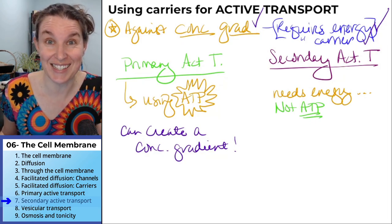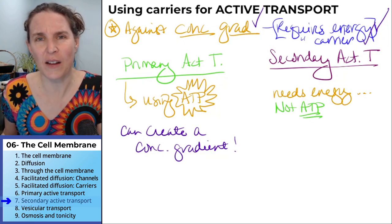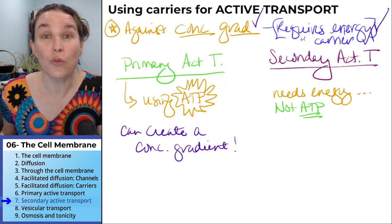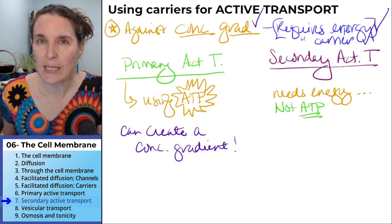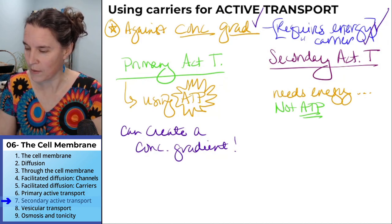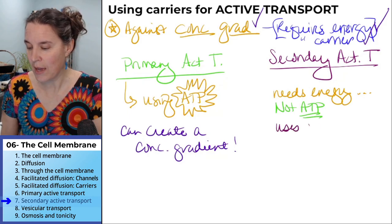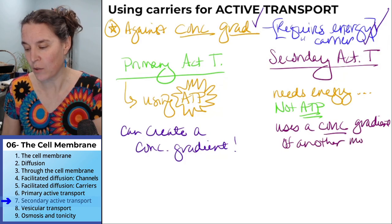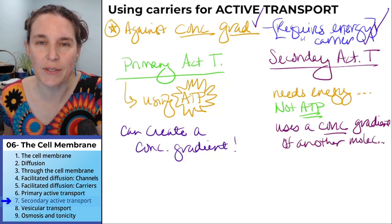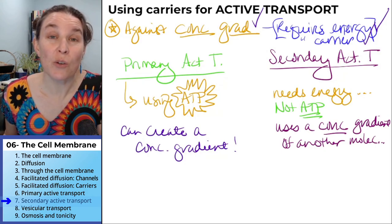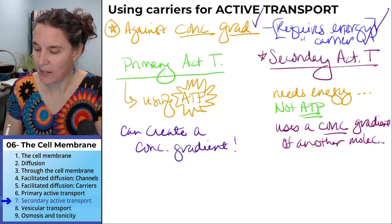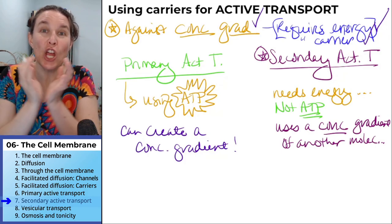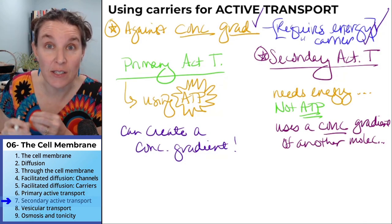I just walked you through a logic thing that you can do on a test. If you are faced with something you've never heard before in your life, you could actually figure it out sometimes — not all the time, but sometimes you can. Secondary active transport doesn't use ATP. Instead, it uses a concentration gradient of another molecule. One molecule, in secondary active transport, moves down its concentration gradient and the carrier uses the energy from that molecule moving down its concentration gradient.